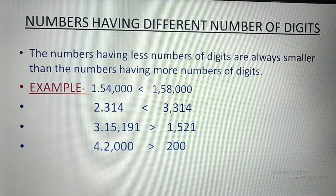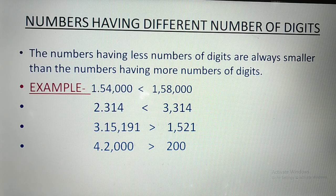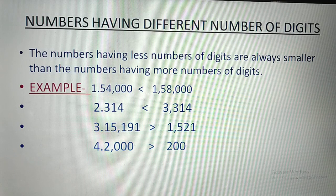Similarly, 314 and 3,314 — 3,314 has four digits, so it is the bigger number. Third example: 15,191 and 15,521 — 15,191 has more digits, so it is the bigger number and the other is smaller. Fourth example: 2,000 and 200 — very easy, 2,000 is obviously the bigger number.